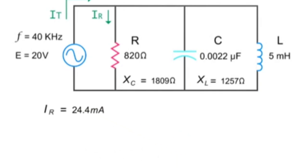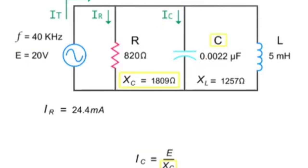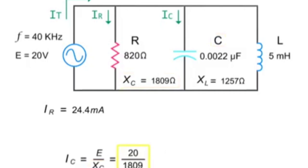To calculate the current through the capacitor, divide the source voltage by the capacitive reactance, or 20 volts divided by 1,809 ohms, which equals 11.1 milliamps.